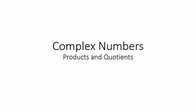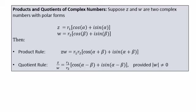In this video we're going to look at products and quotients of complex numbers. Suppose Z and W are two complex numbers with polar forms, each having their own modulus and their own arguments. The product rule says that to multiply two complex numbers we multiply their moduli and add the arguments. To divide two complex numbers we divide the moduli and subtract their arguments. In this video we will develop both of these forms and look at a geometric interpretation.